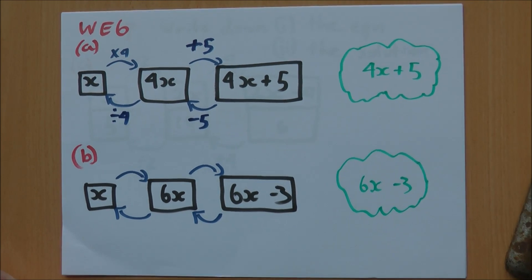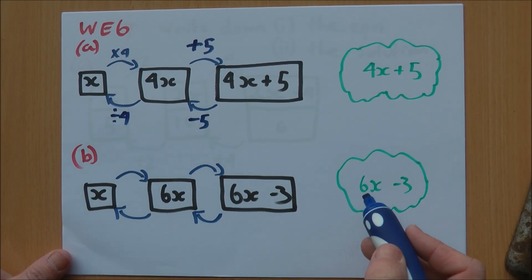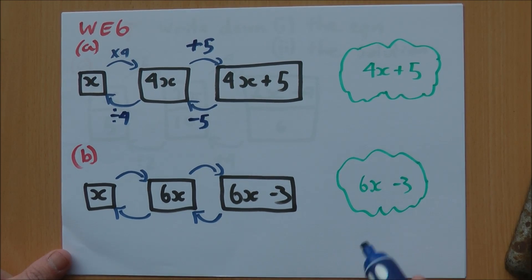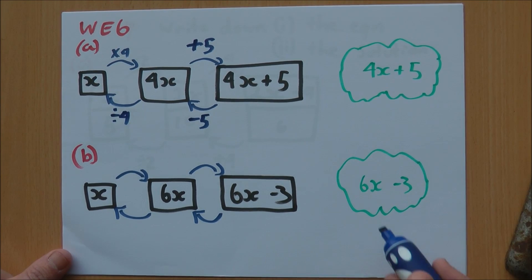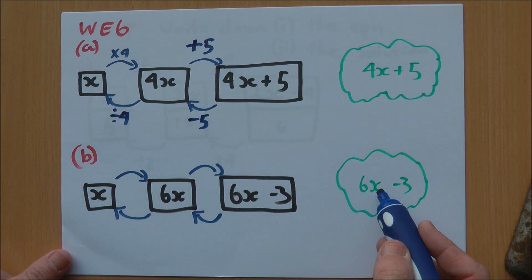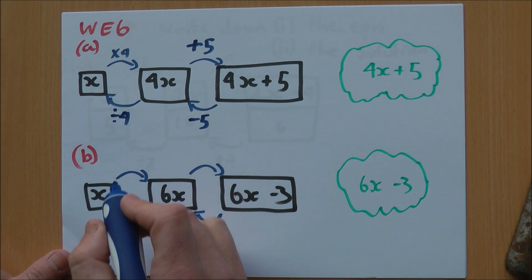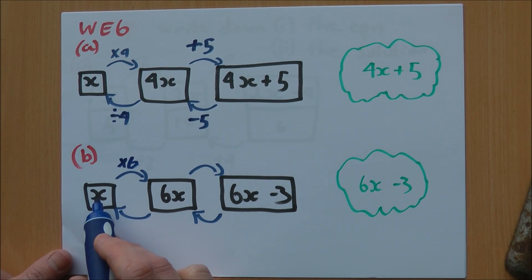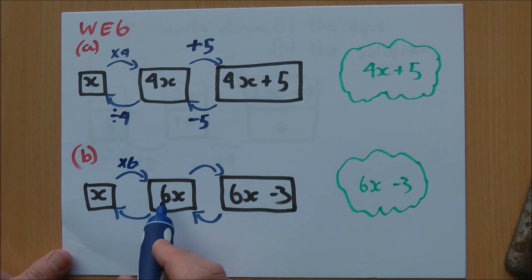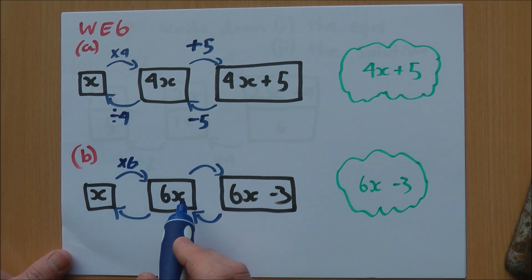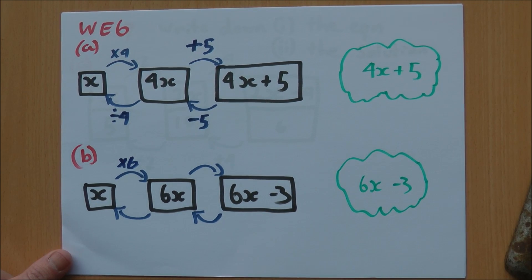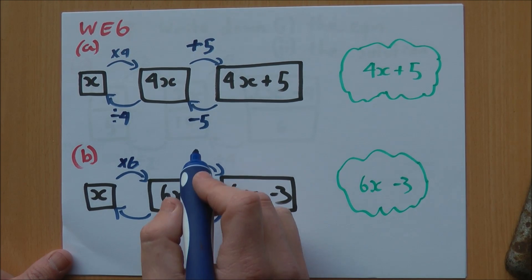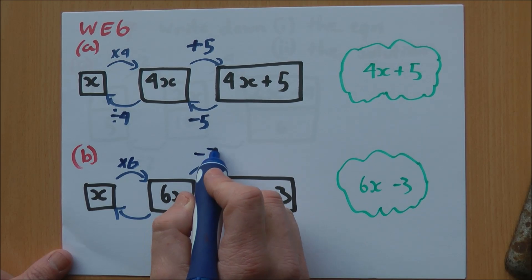In part B, same thing. We've got 6x minus 3 as our expression. So the first thing we have is our x and we're multiplying it by 6 to get to 6x. Then what do we do to get to the next spot? We have this minus 3 on the end, so we're subtracting 3.